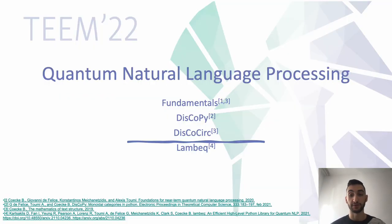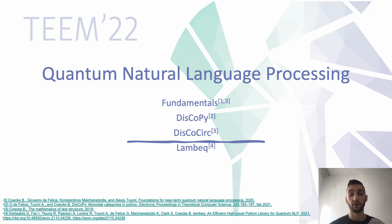Quantum natural language processing is a relatively new research area which uses NLP models together with certain quantum phenomena such as superposition, entanglement, or interference to perform language-related tasks on quantum hardware. Bob Coecke is one of the main authors of QNLP, who established the conceptual and mathematical foundations for quantum natural language processing, as well as the creation of the DisCoPy libraries, which provide code tools to define an intuitive syntax to create string diagrams and monoidal functors.